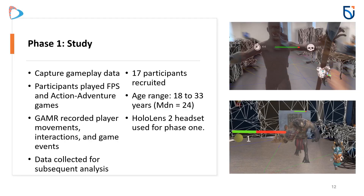To evaluate our tool, due to the lack of access to open-source mixed reality game projects, we developed two games with different genres: an action-adventure and an FPS game. In the first phase of the evaluation, we integrated the developed games with the GAMR analytics tool to collect gameplay data. Participants played both games while GAMR recorded the player movements, interactions, and game events. This phase involved 17 participants aged 18 to 33, providing crucial data for the next stage of our study.